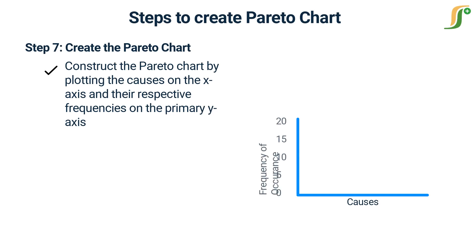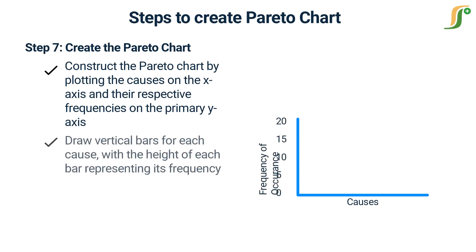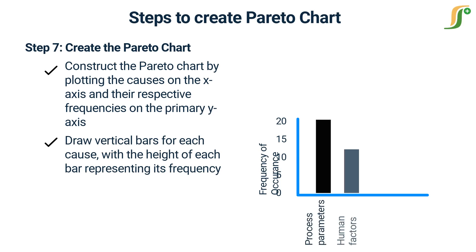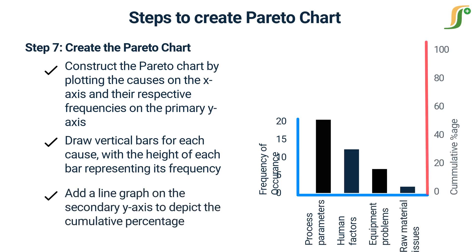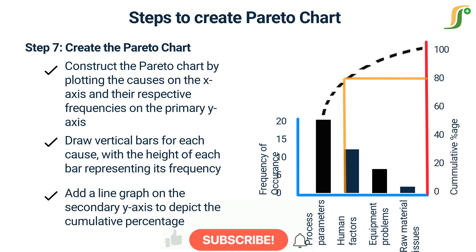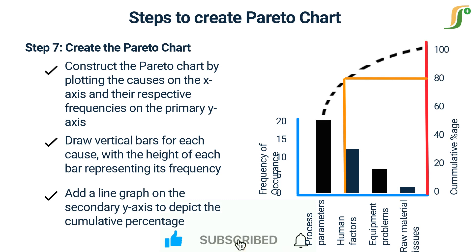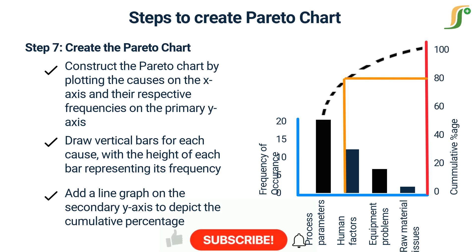Step 7 — Create the Pareto chart: construct the Pareto chart by plotting the causes on the x-axis and their respective frequencies on the primary y-axis. Draw vertical bars for each cause, with the height of each bar representing its frequency. Add a line graph on the secondary y-axis to depict the cumulative percentage.